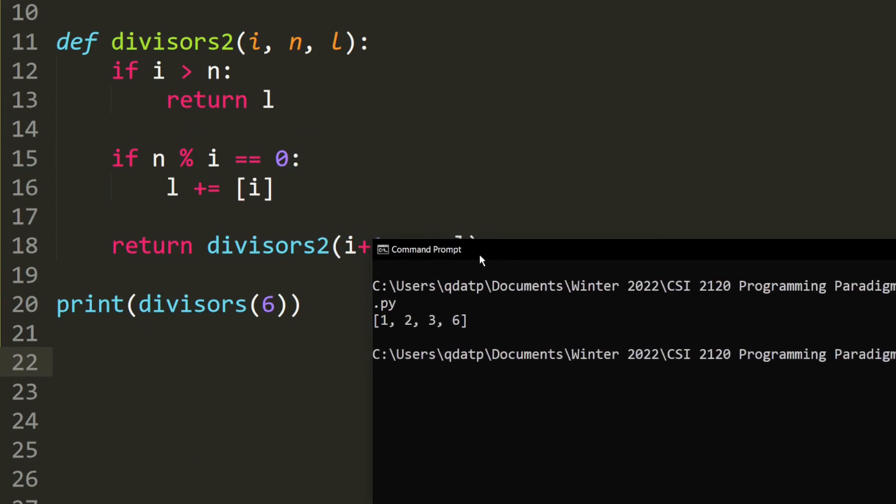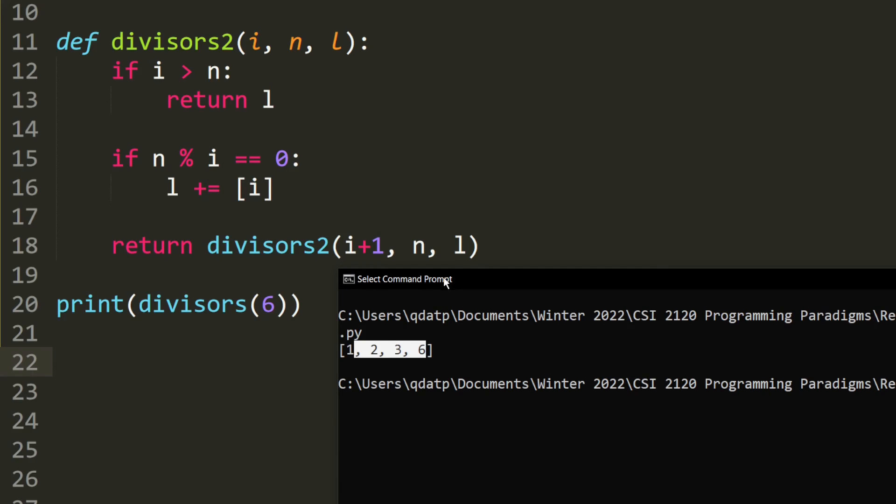So as you can see, it also prints out 1, 2, 3, and 6, which means that our code is correct.